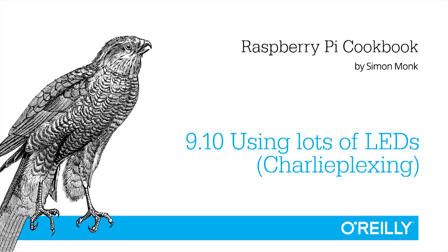In this recipe, we're going to look at how you can connect larger numbers of LEDs to a Raspberry Pi using a minimum number of the GPIO pins. The technique for doing this is called chariplexing.